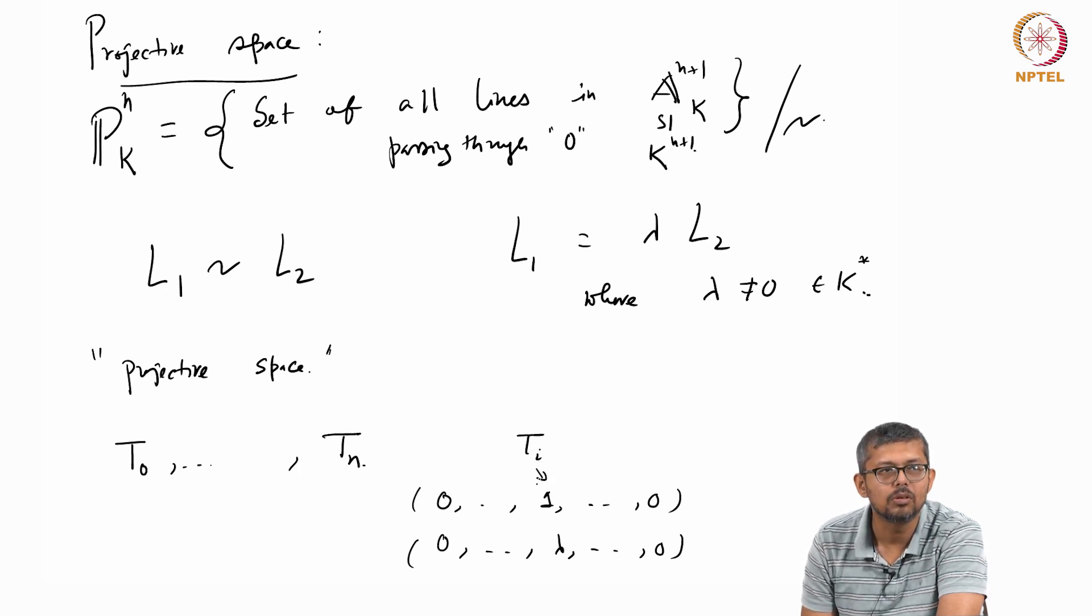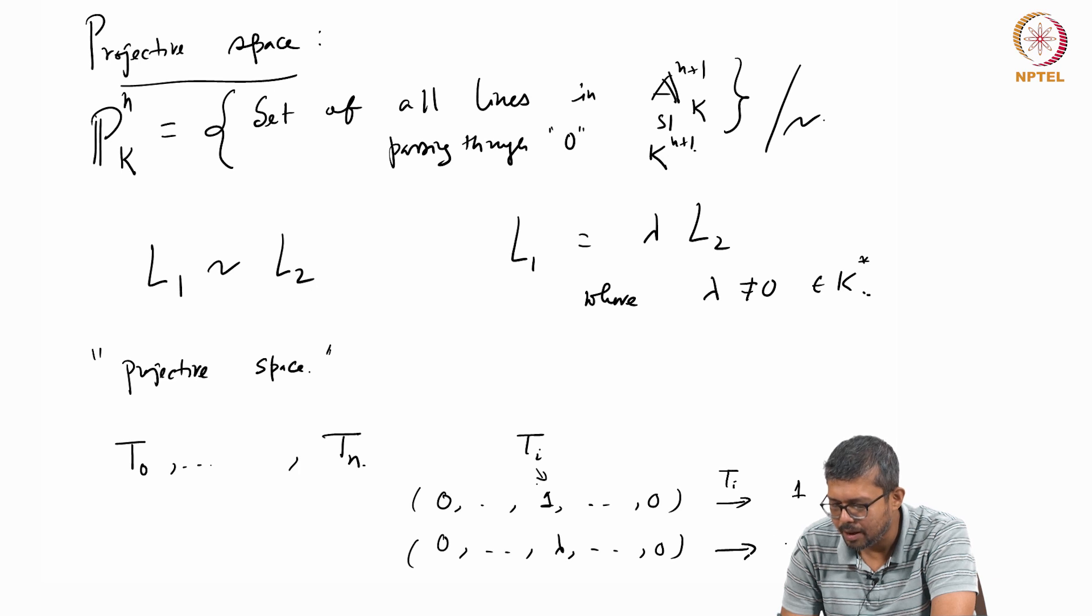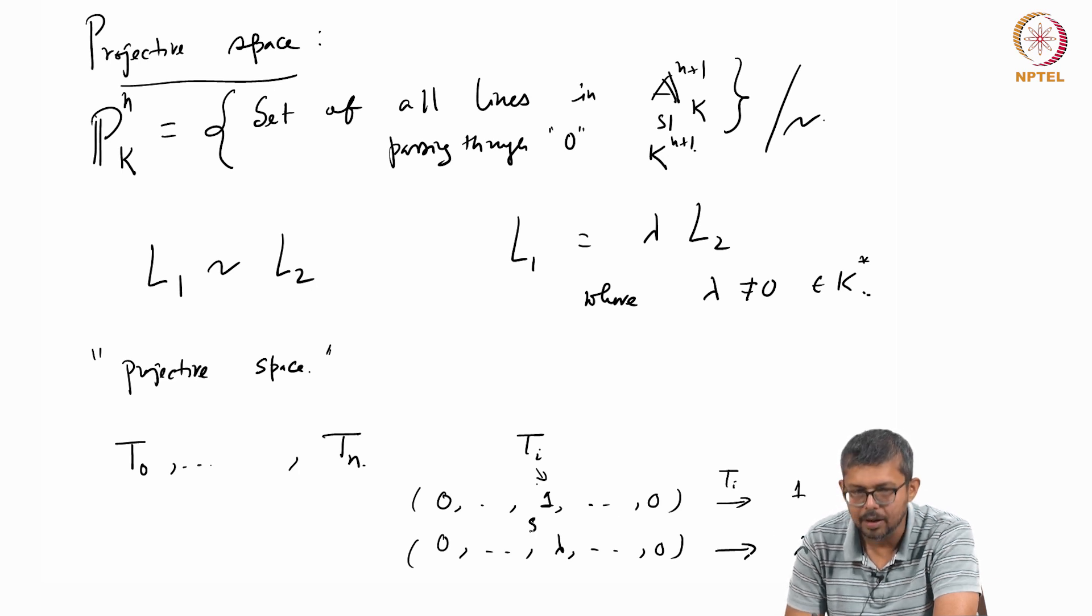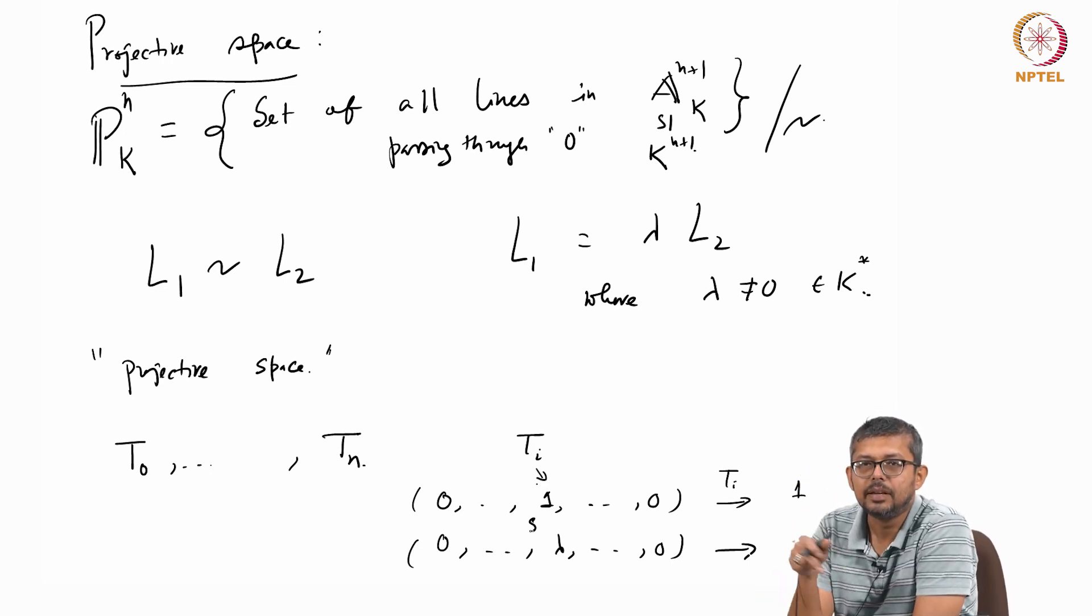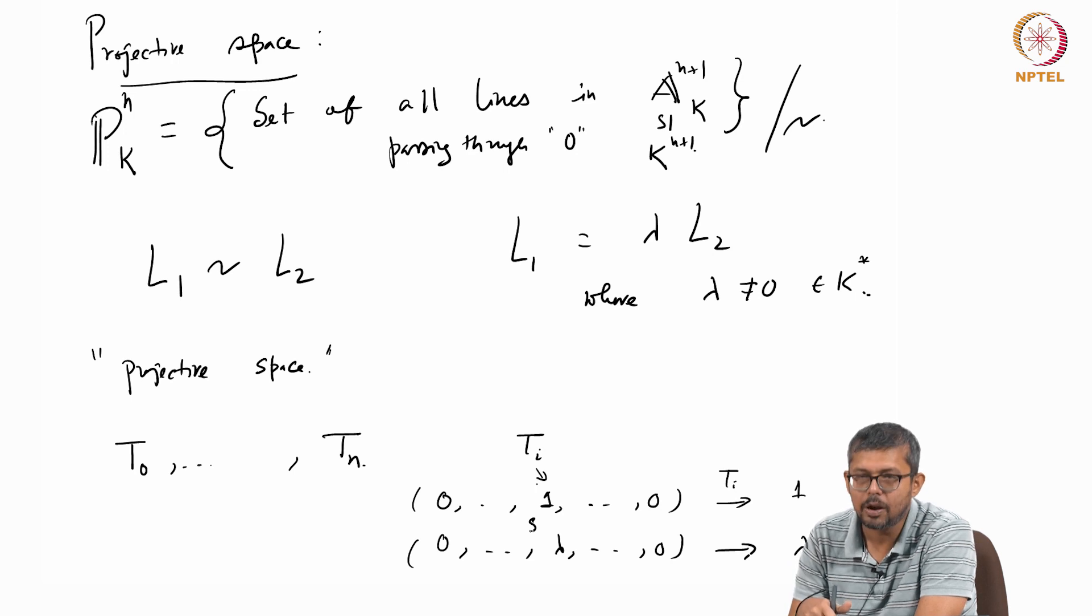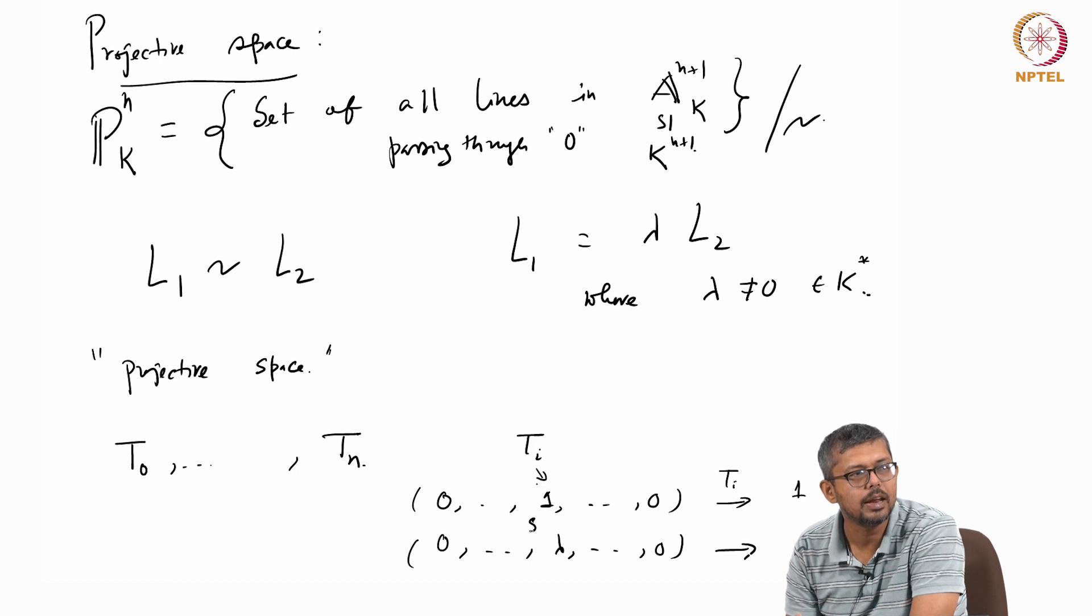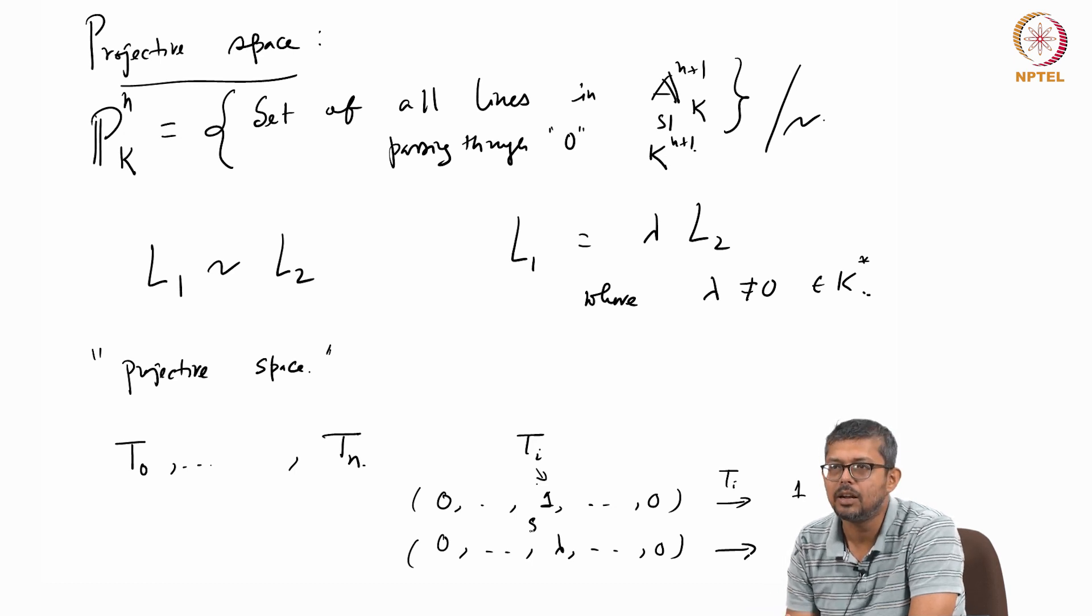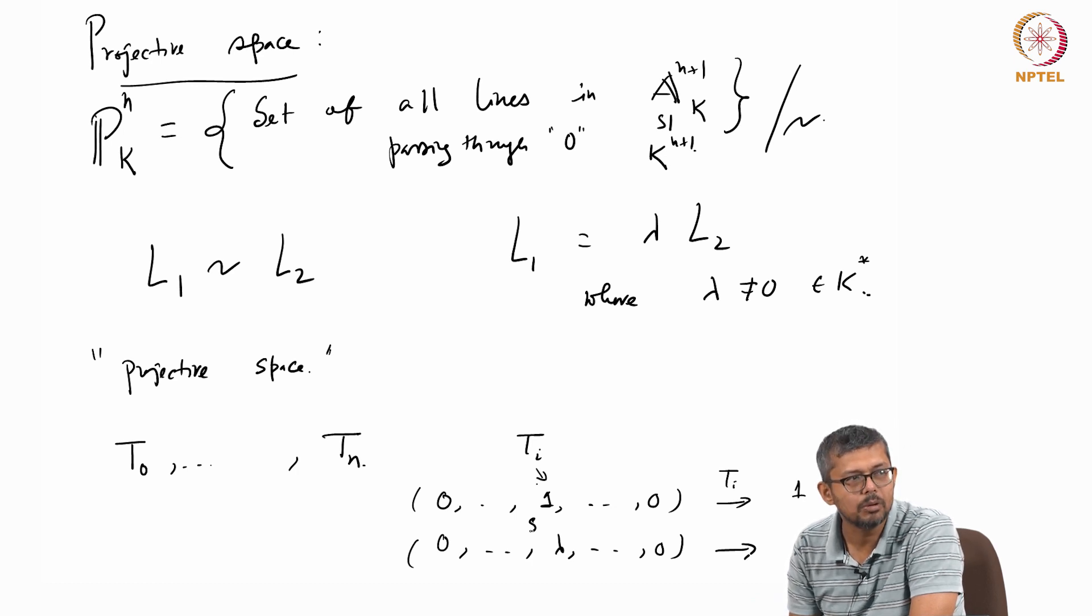these both go to the same point. But if you just take the projection, the t_i map, then one goes to 1 and another one goes to lambda. But they are equivalent. So whenever you define a function, it should be well defined. These two points are same in the projective space. But one is taking value 1 and one other is going to lambda. So these t_i's are not a good function. They are not functions. That is the first starting point that things go wrong in projective space. That coordinates are no longer functions on projective space.